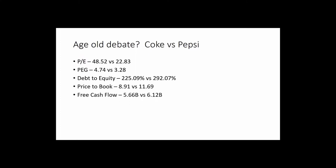Free cash flow is a big deal — this is what's going to get any company through rough times: market crashes, changing consumer sentiment. This is the protection factor. Both of these companies are sitting on a lot of cash: Coke has $5.66 billion in free cash flow versus Pepsi's $6.12 billion. Both companies have a lot of cash and can weather any coming financial storms.